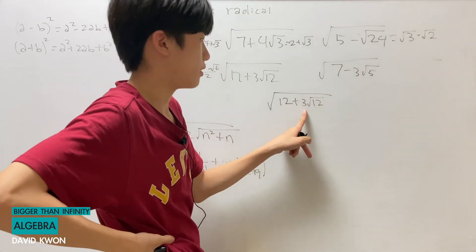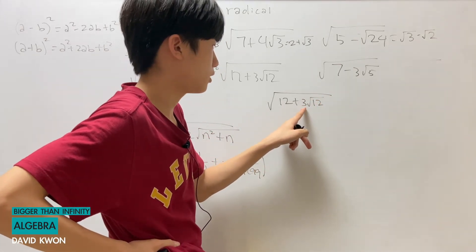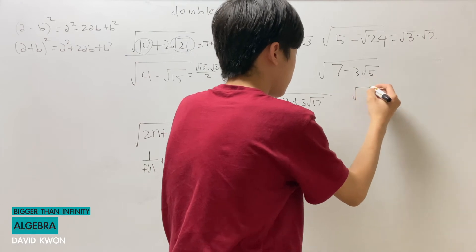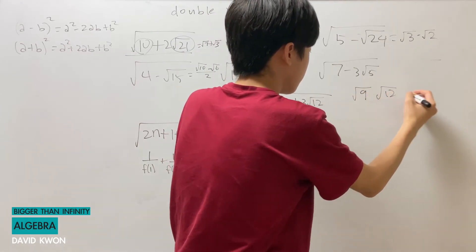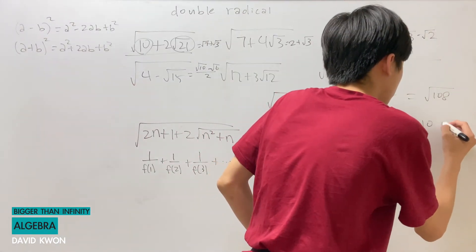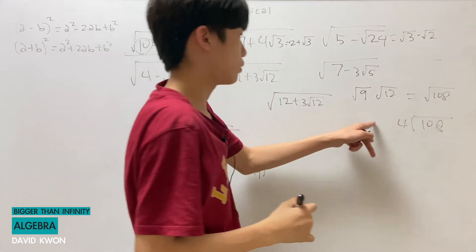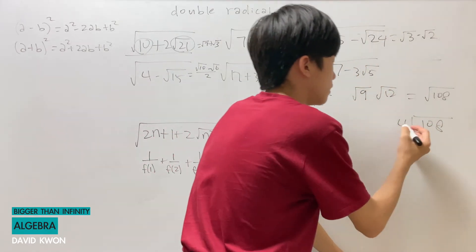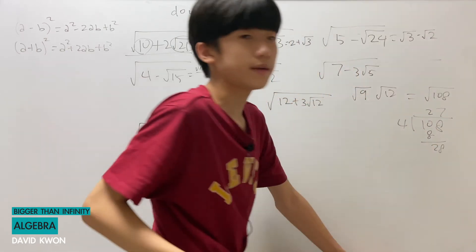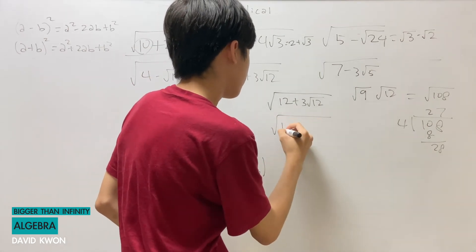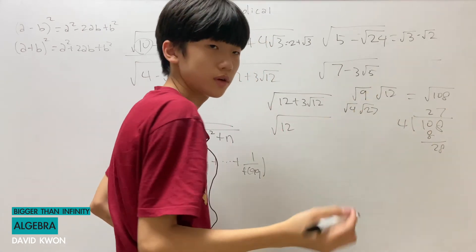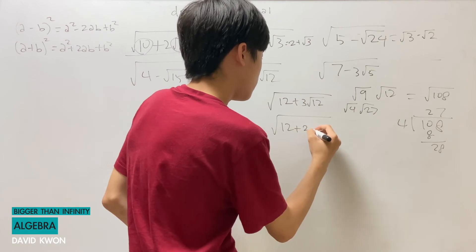For this problem, we want the 2 out front, but we have a 3. So let's put the 3 back in and pull out the 2. The 3 is actually equal to square root of 9, and square root of 9 times square root of 12 equals square root of 108. We want to pull out the 4 since square root of 4 is 2. So 108 divided by 4 is 27, giving us square root of 4 times square root of 27. Those are both equal, just with the numbers changed.